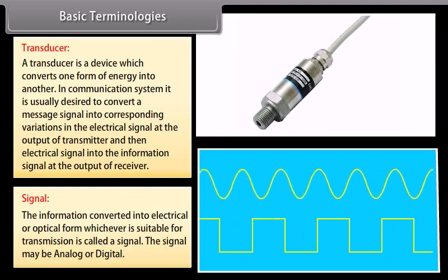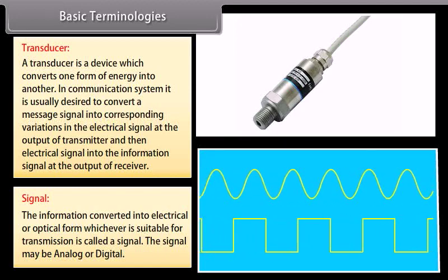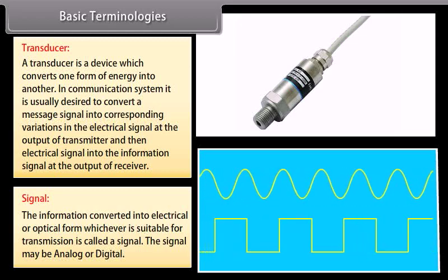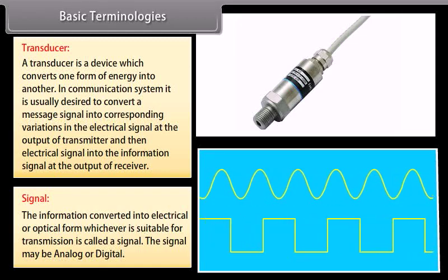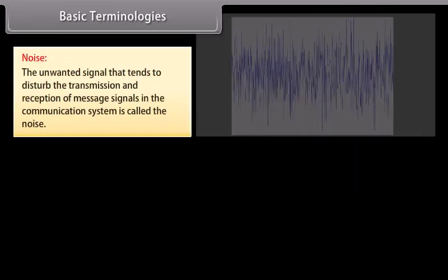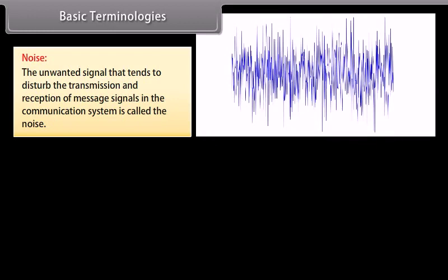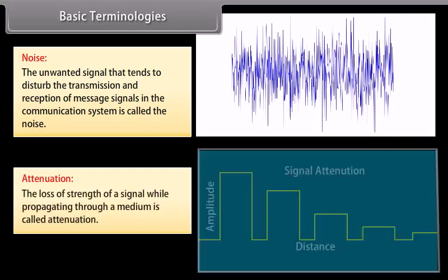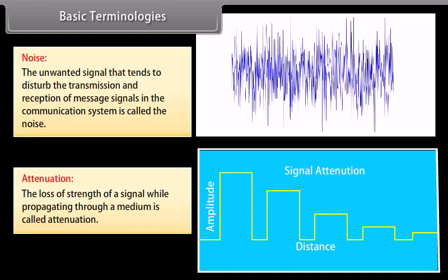The information converted into electrical or optical form, whichever is suitable for transmission, is called a signal. The signal may be analog or digital. Noise is the unwanted signal that tends to disturb the transmission and reception of message signals in the communication system. Attenuation is the loss of strength of a signal while propagating through a medium.